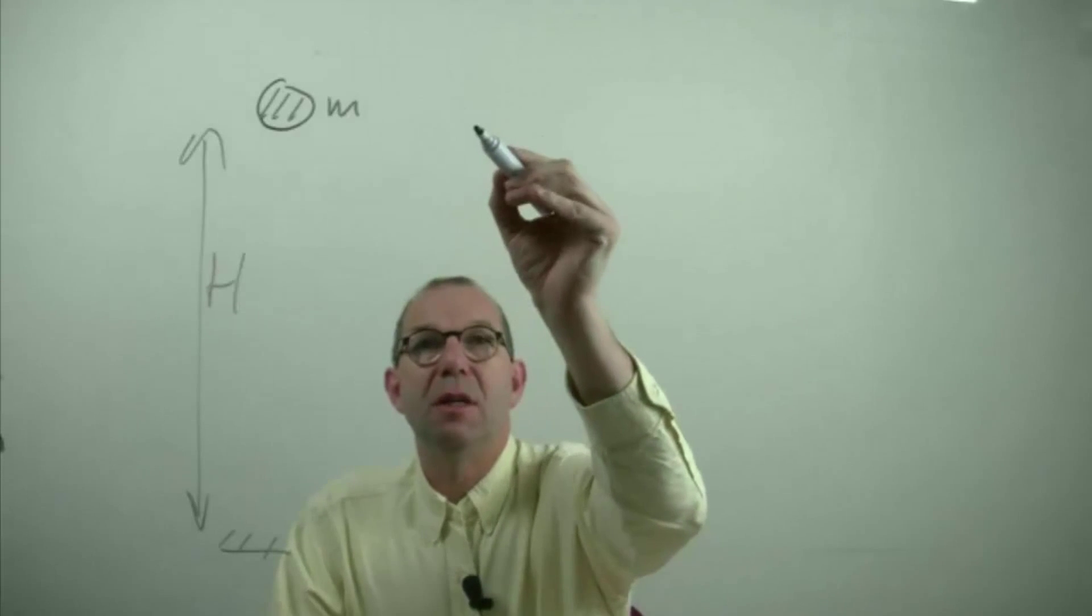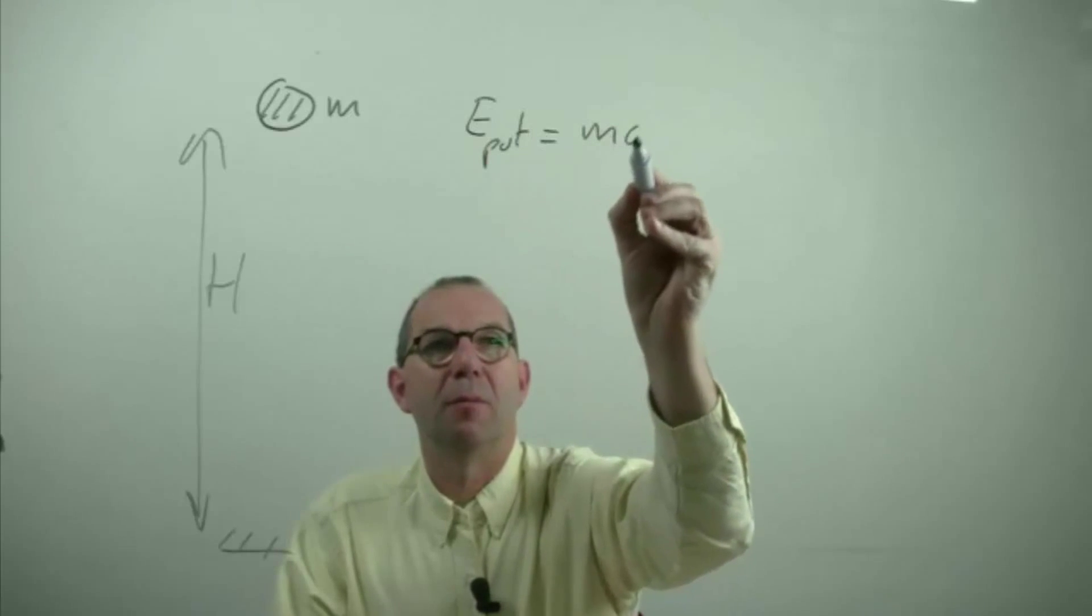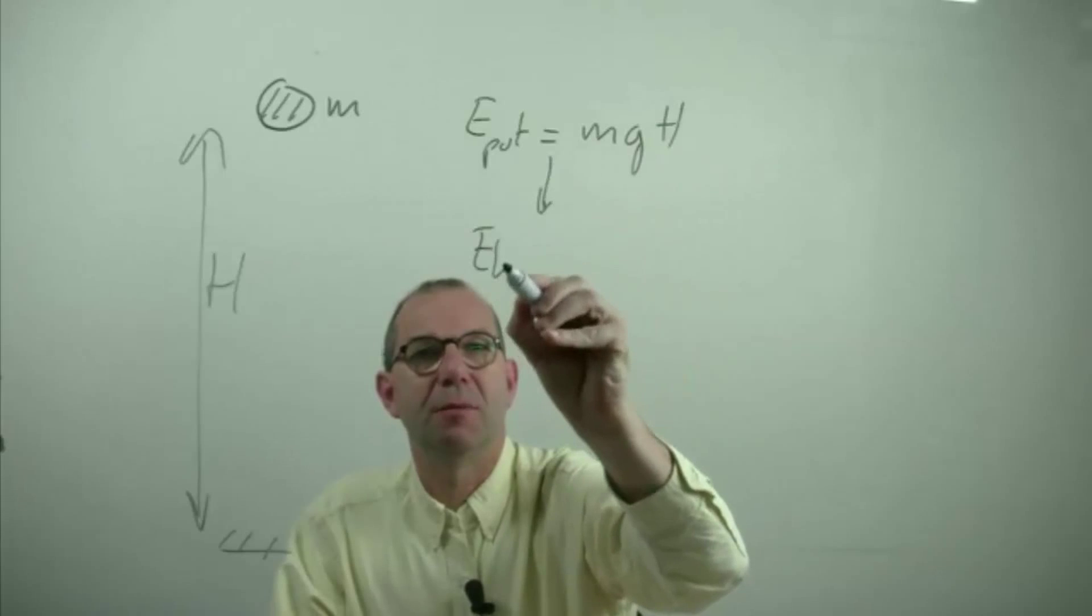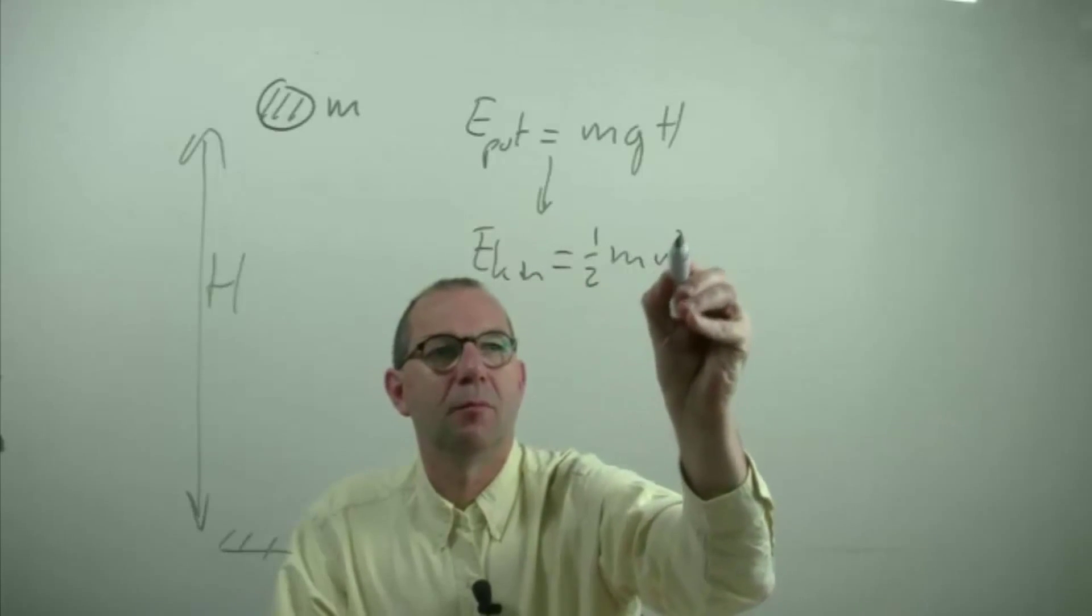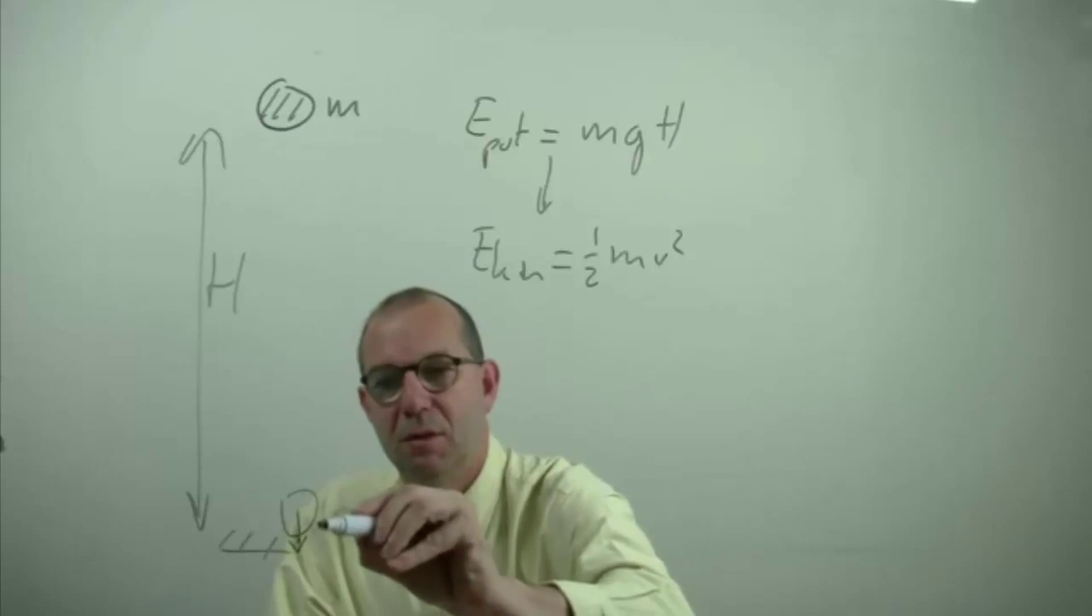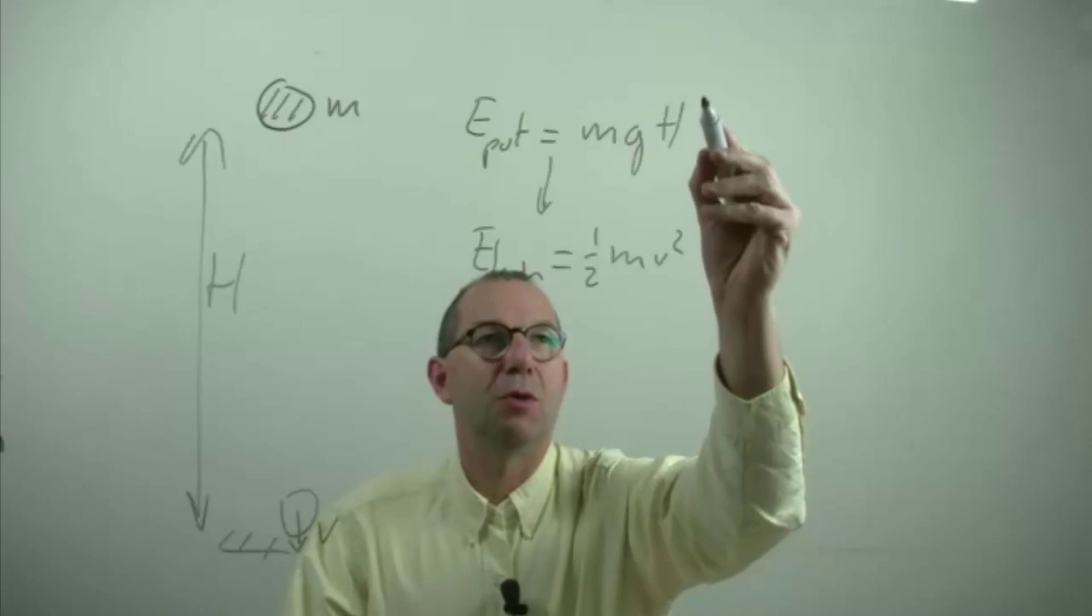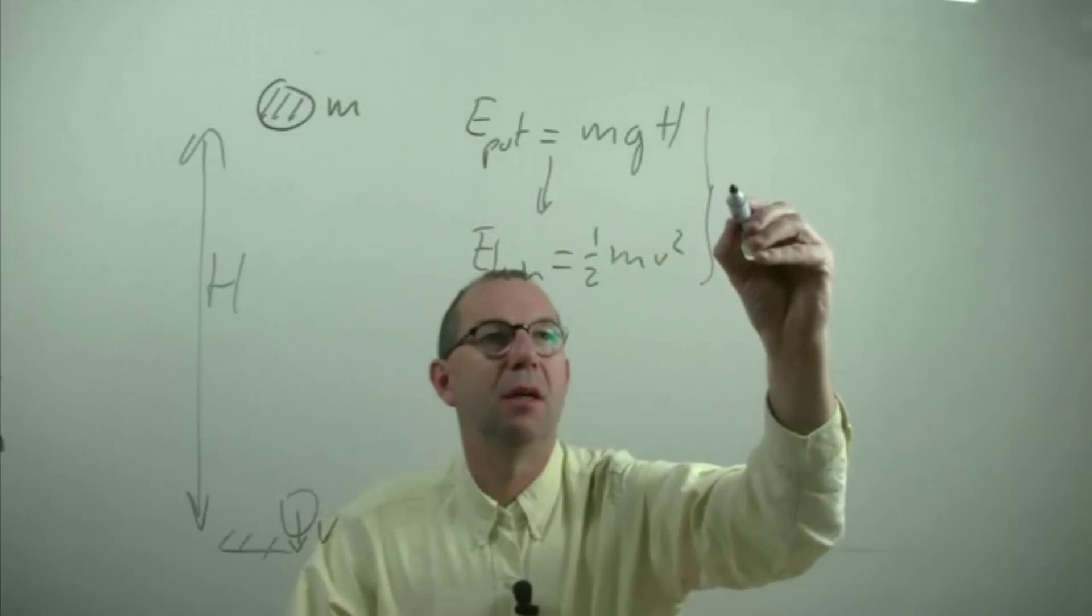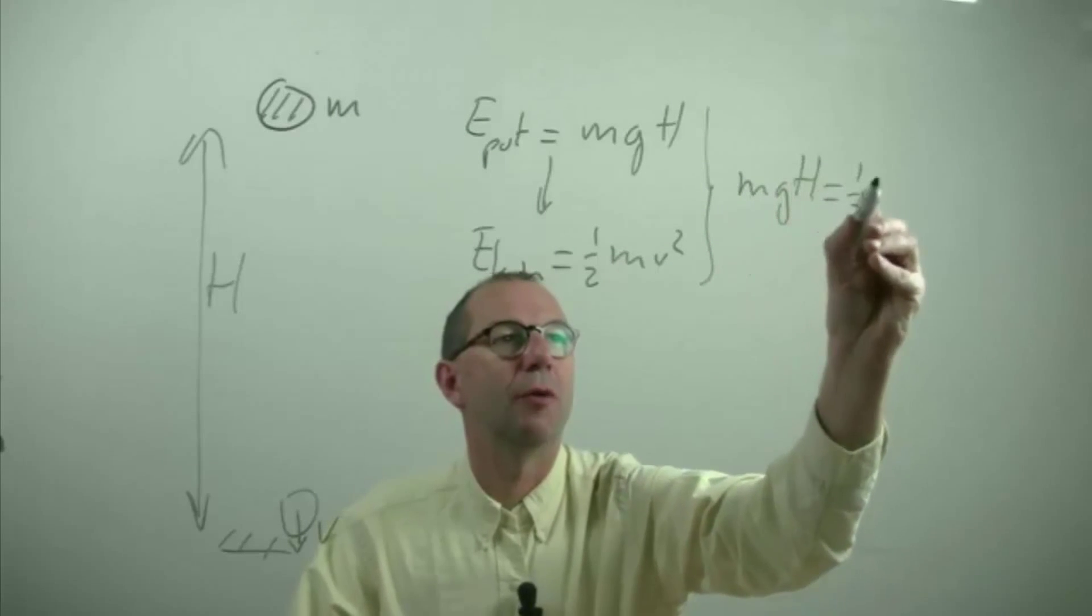Initially there is potential energy of mgh and that will be converted into kinetic energy. And that kinetic energy will be found here velocity just before impacting. Energy conservation says that the energy here must be the energy there and thus mgh equals half mv squared.